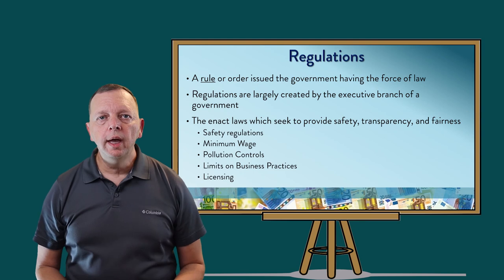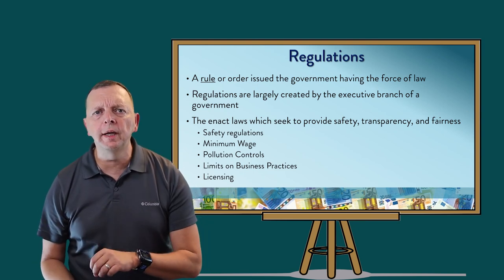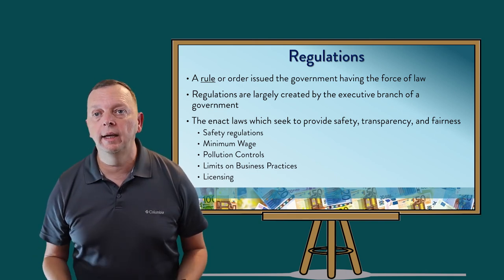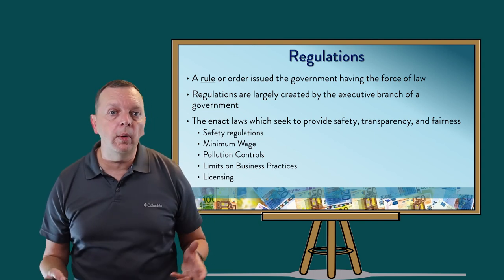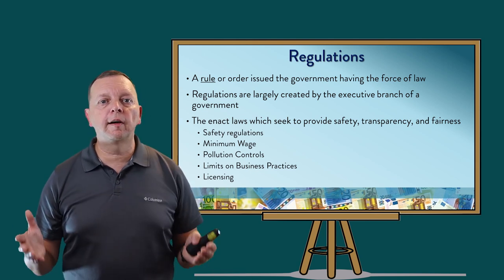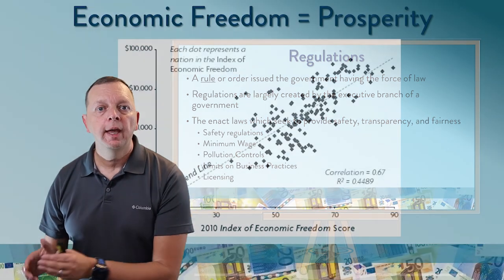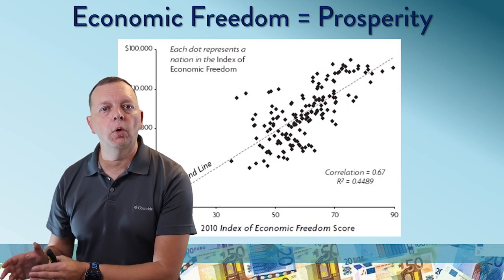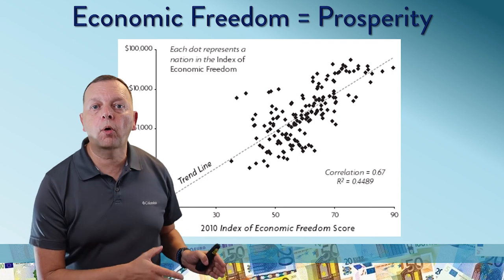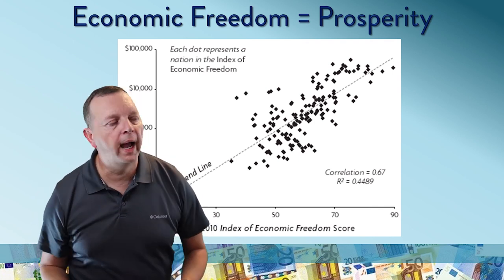Governments also have regulations — rules issued by the government, usually by the executive branch, to enact laws, provide safety, transparency, and fairness. These include safety regulations, minimum wage, pollution controls, limits on business practices, and licensing. And here we have a dilemma that governments throughout the world face: how much of a role should the government have? What we find is the more the government takes over, the less prosperous a country might be. The more economic freedom that the people have, the more prosperity it has for its people. So we've looked at how the agricultural and industrial revolutions changed our world and built the economic systems we have. We'll talk about governmental systems next time. Until then, keep on learning.